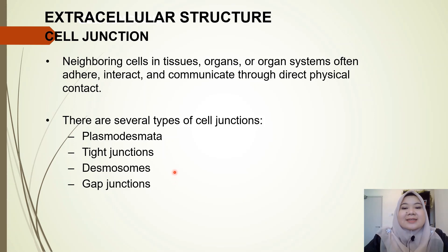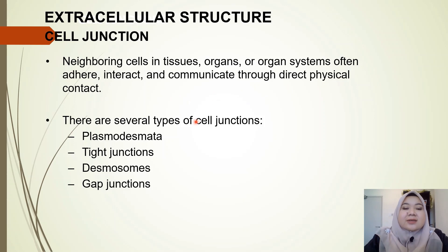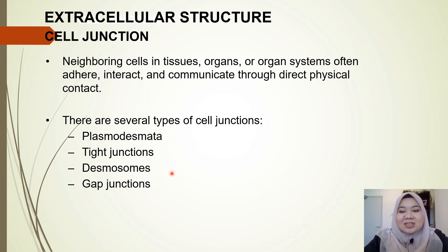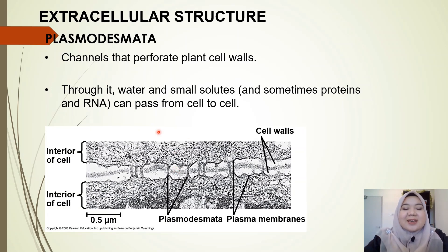Next are cell junctions. Neighboring cells in tissues, organs, and organ systems often interact and communicate through direct physical contact. We are going to discuss several types of cell junctions: plasmodesmata in plant cells, and three cell junctions in animal cells — tight junctions, desmosomes, and gap junctions. We'll look at the plant cell junction first.